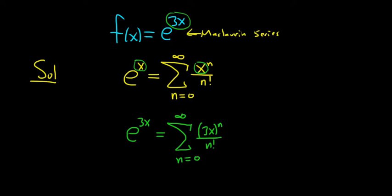And the last thing you could do is you could simplify this, right? This is the infinite sum as n runs from 0 to infinity. And then 3x to the n, you can write that as 3 to the n times x to the n. And then on the bottom, you just have the n factorial.